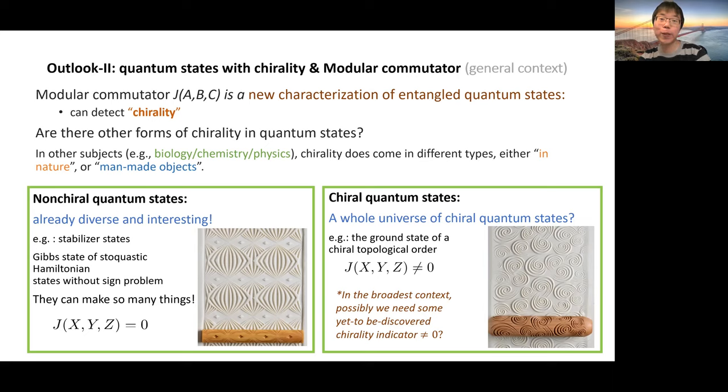Non-chiral quantum states are already very diverse and interesting, and they are known to be useful for many different tasks in quantum information theory. Since there are also chiral quantum states, I would like to ask if there is any advantage for using chirality to do anything. Certainly I don't have a clue of the answer. Maybe the most interesting question hasn't been asked yet. It's fun to ask more questions. That's all I want to say. Thanks.